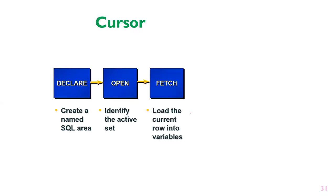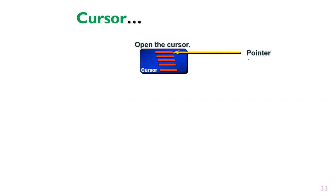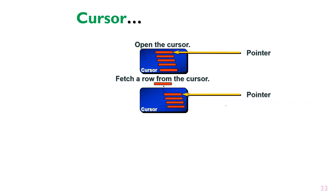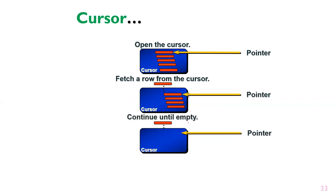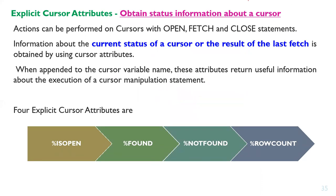In the last class we discussed declaring the cursor, opening the cursor, fetching the cursor, and closing the cursor. When you open the cursor there will be a pointer, and if you fetch the cursor the pointer points to a particular record. This process continues until all the records are fetched, and finally the cursor will be closed. Today's class will discuss explicit cursor attributes.